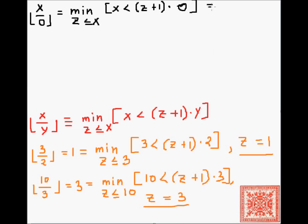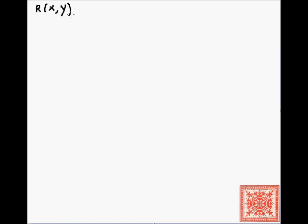The minimization of z less than or equal to x, where x is less than z plus 1 times 0, is always going to be 0, because z plus 1 times 0 will be 0. So let's consider another function.